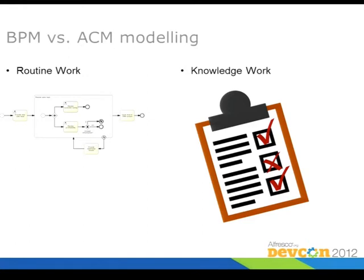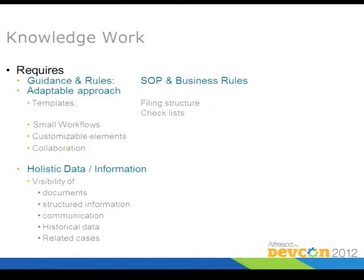So when it comes to adaptive case management, the data is at the center, but we have to bring in external data as well into the view. The comparison is business process management versus adaptive case management — this is routine work and this is knowledge work. You work on checklists, you assess data, and then you decide what kind of steps to take next.